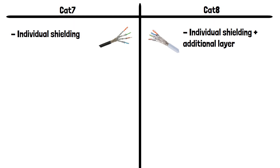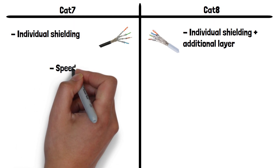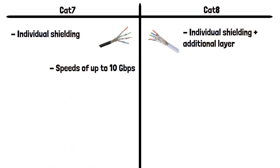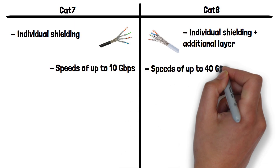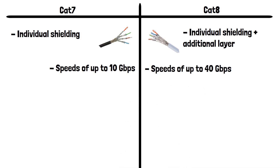Now let's look at speed. CAT7 cables support data transfer speeds of 10 gigabits per second, and CAT8 cables support data transfer speeds up to an incredible 40 gigabits per second.